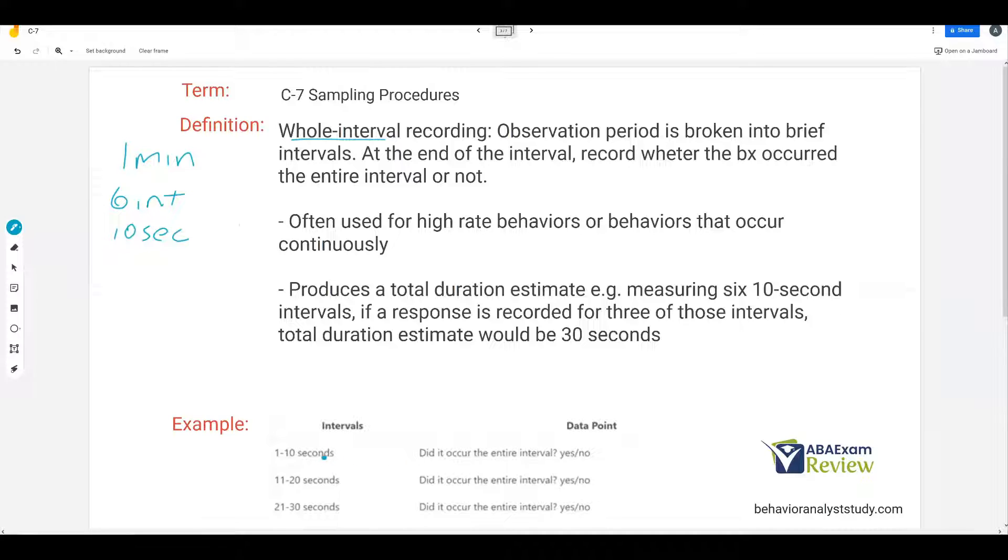If we look at the bottom, for our example, you have your intervals one to 10 seconds. Data point: did it occur the entire interval? Yes or no. And what you'll see with our sampling procedures, we only have one data point for each interval. It's not a frequency recording. We're not recording how many times it's happening. We're recording, did it happen with the required amount, so with whole interval the whole time, or did it not?